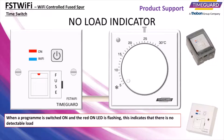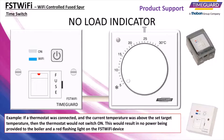When a program is switched on and the red-on LED is flashing, this indicates that there is no detectable load. If a thermostat was connected and the current temperature was above the set target temperature, then the thermostat would not switch on. This would result in no power being provided to the boiler and a red flashing light on the FST Wi-Fi device.